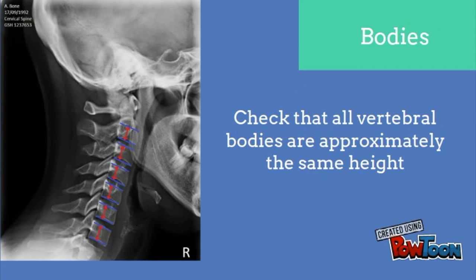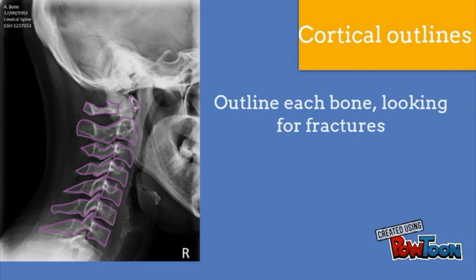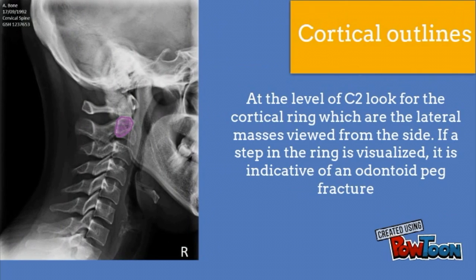Note that C1 does not have a body. Check that all bodies correspond to a spinous process. For cortical outlines, at the level of C2, look for the cortical ring, which are the lateral masses viewed from the side. If a step in the ring is visualized, it is indicative of an odontoid peg fracture.